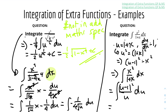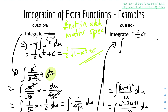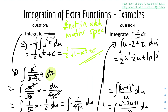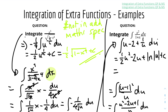So rewriting the integral: x squared becomes (u minus 1) squared, the denominator 1 plus x becomes u, and dx becomes du. Expanding and simplifying: (u squared minus 2u plus 1) over u du, which simplifies to the integral of (u minus 2 plus 1 over u) with respect to u. Integrating gives 1/2 u squared minus 2u plus ln u plus c. Substituting back u equals 1 plus x gives the final answer: 1/2 times (1 plus x) squared minus 2 times (1 plus x) plus ln |1 plus x| plus c.